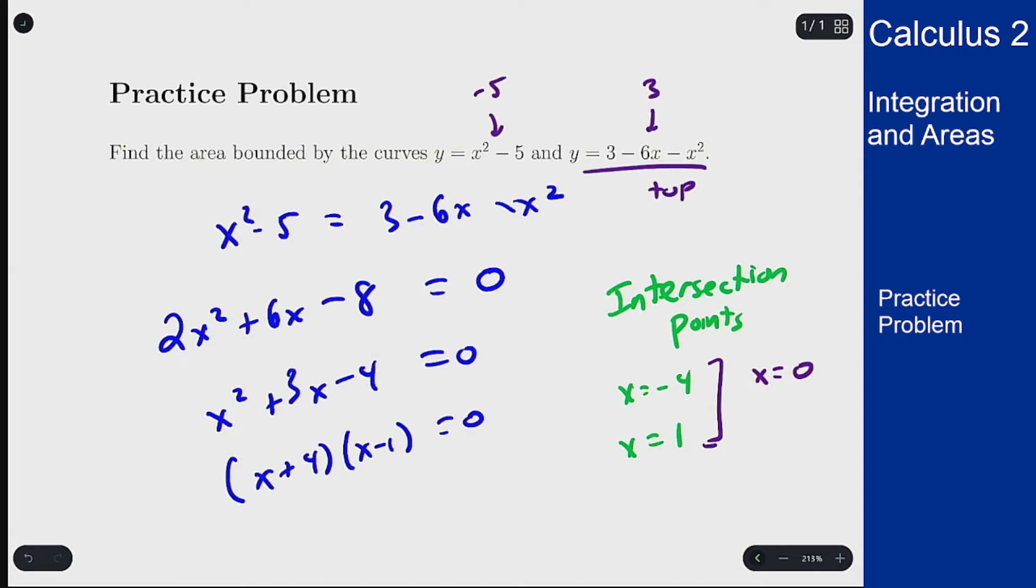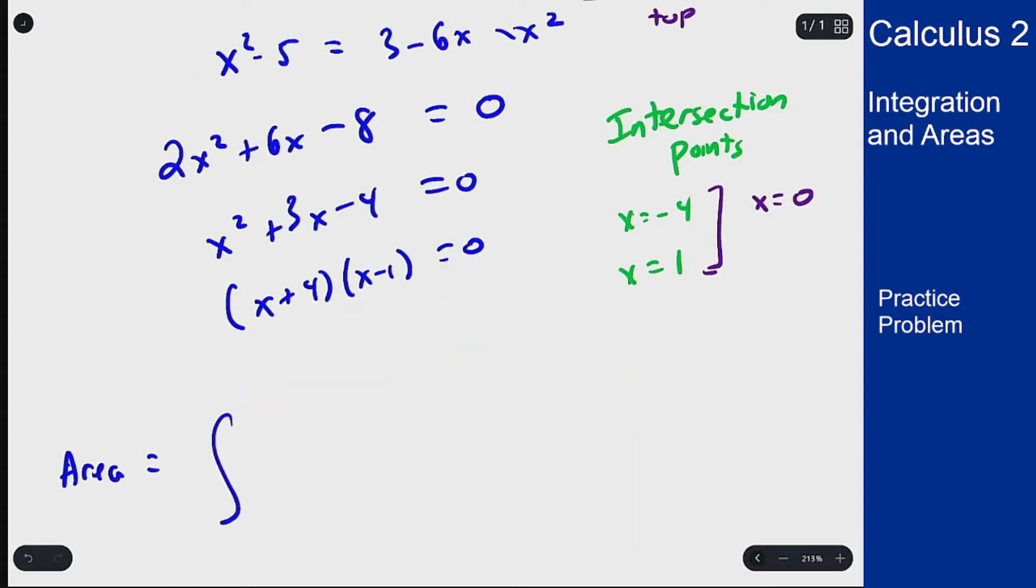The area between these curves is found by the integral from minus 4 up to 1 of the top function minus the bottom function. We can solve by simplifying the expression, then taking the integral and plugging in the boundary points.